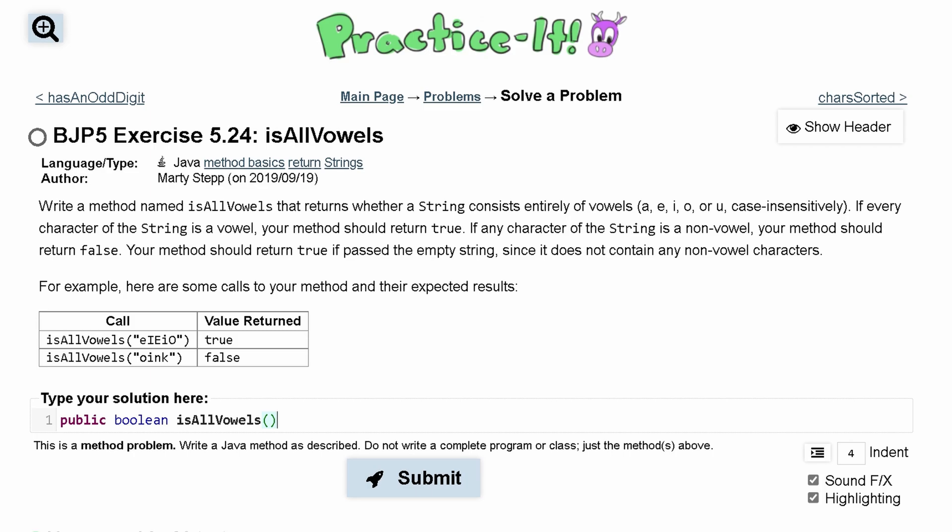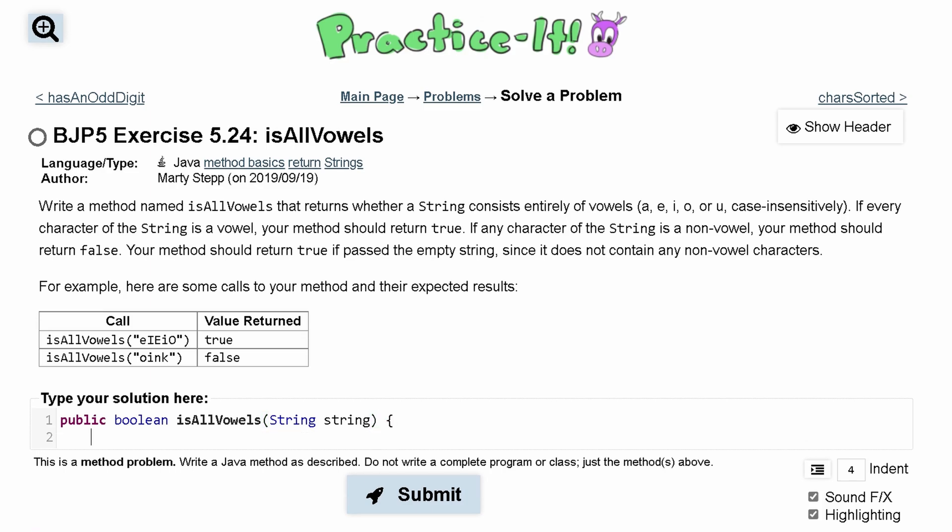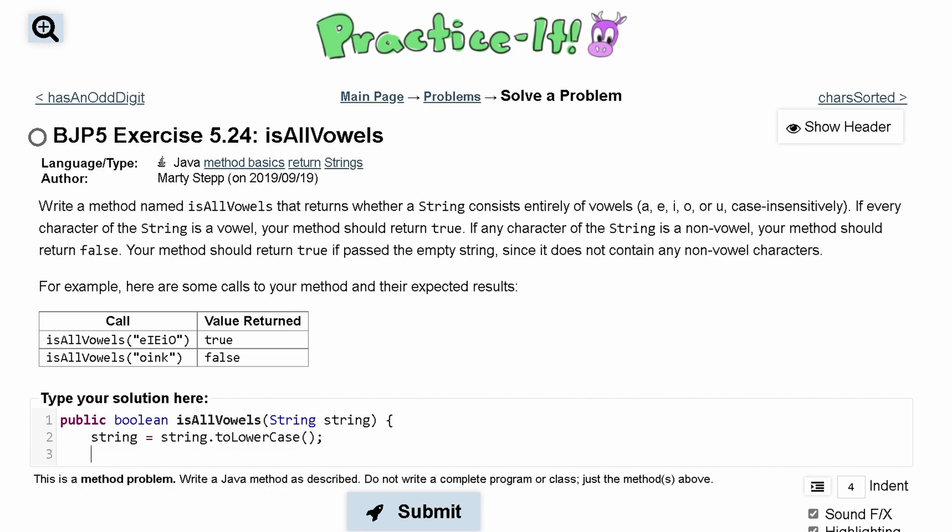We're just going to check everything that's passed in. As long as everything is a vowel, it'll return true. If it hits anything that's not a vowel, it's going to immediately return false. Inside of here, we're going to take a string as input, and then let's set this all to lowercase. We'll do string equals string dot toLowerCase, and this is going to make this entire string lowercase, and we're storing it back in string.